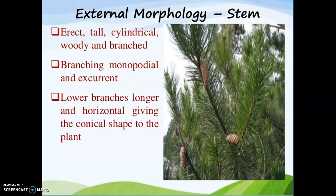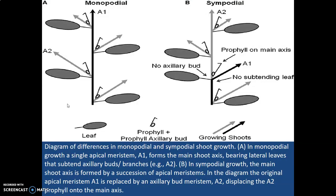External morphology of the stem: stems are erect, tall, cylindrical, and woody — woody because the wood here is pycnoxylic. Branching in the stem is monopodial. In monopodial branching, the meristem remains the same and does not change. The lower branches are longer and horizontal; the lower branches are longer than the upper branches, that is why the plant attains a conical or pyramidal shape. Two types of branching are monopodial and sympodial; in Pinus, branching is monopodial.